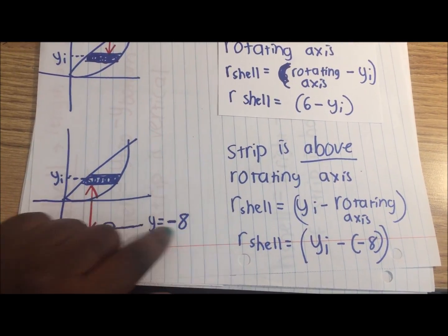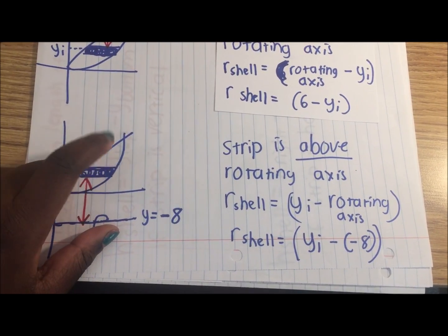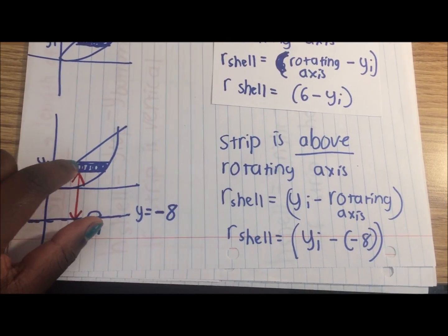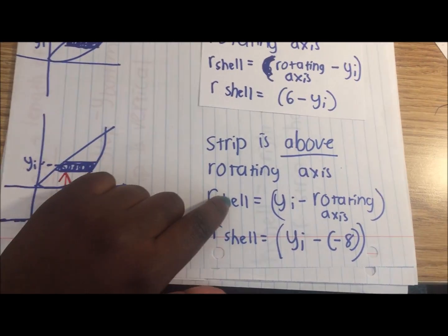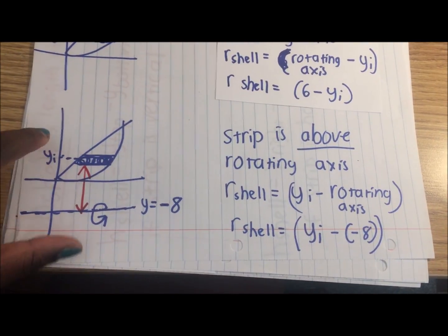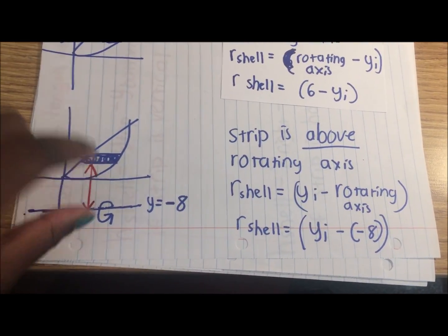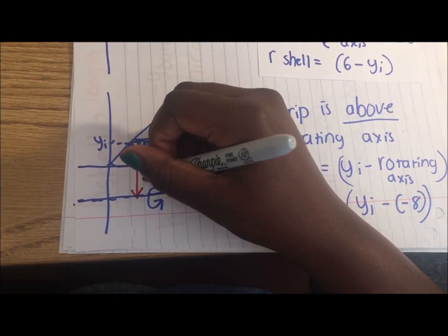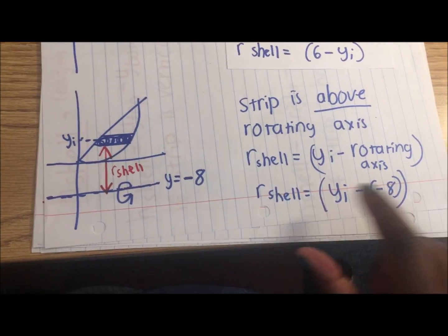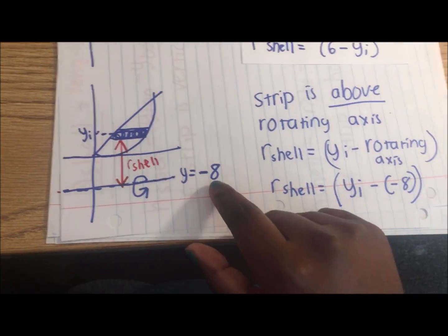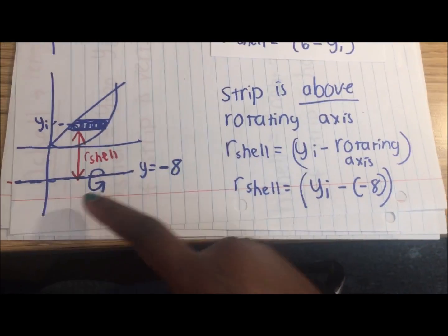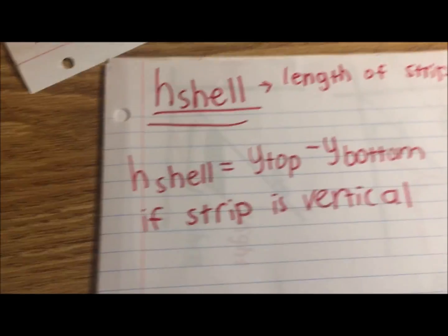Here, the rotating axis is y equals negative 8, and the strip is above the rotating axis — the rotating axis is down here and the strip is all the way above it. So yi is the y component of the strip, and r_shell is going to be yi minus the rotating axis. So r_shell equals yi minus negative 8, since the rotating axis is negative 8.